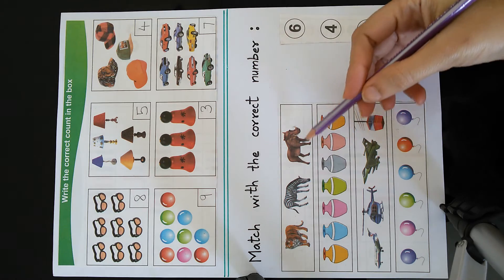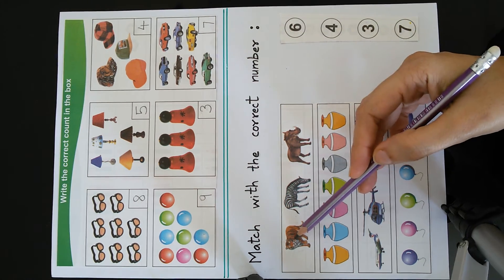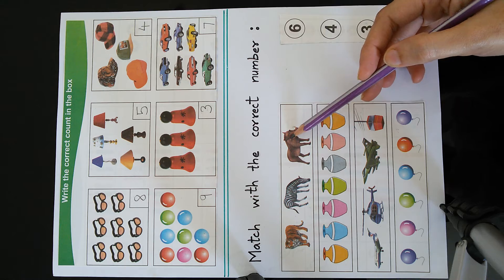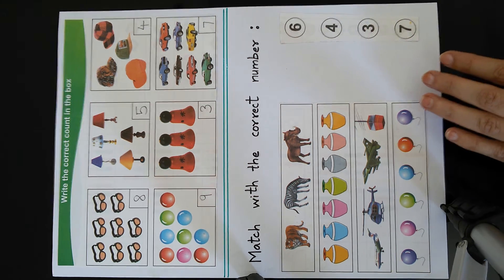The first picture shows animals. Let us count them. 1, 2, 3. So we will join to the number 3.